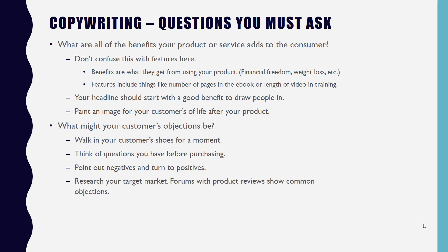Research your target market. Look at forums with product reviews that show common objections. Find the common products in your niche, and especially if you're selling on ClickBank, look at the top sellers in your category. You can do a Google search for a product name plus 'review forum' and see what forums pop up — you'll see people's very honest opinions and common objections. Then integrate those objections into your copy and use that to turn people in your favor.